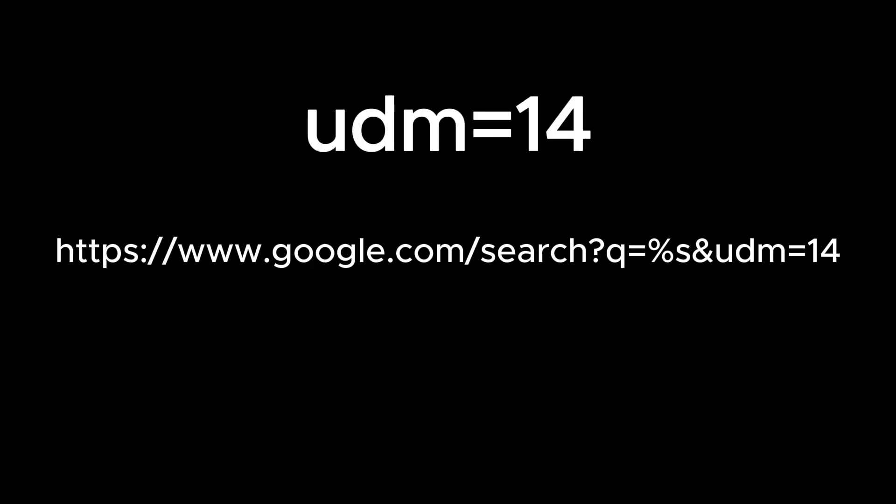The URL will look something like this: google.com/search?q=%s&udm=14. The important part is UDM equals 14 — that's what will set it to web results.